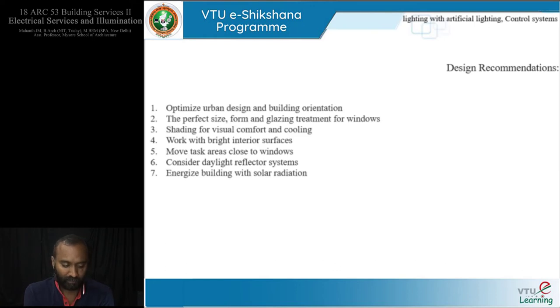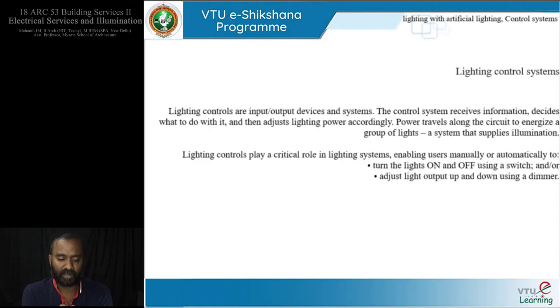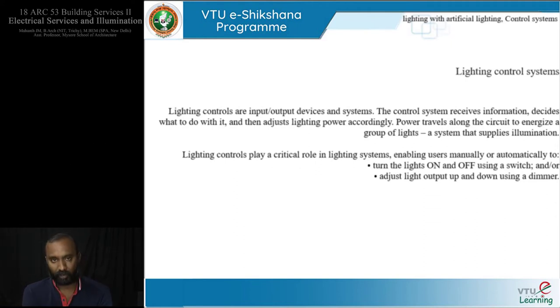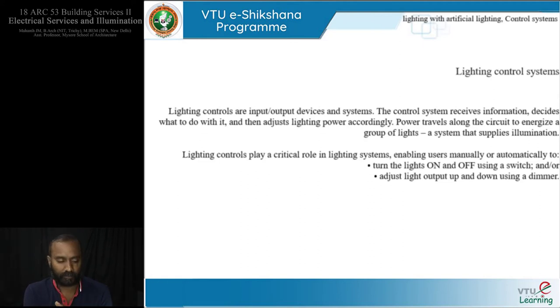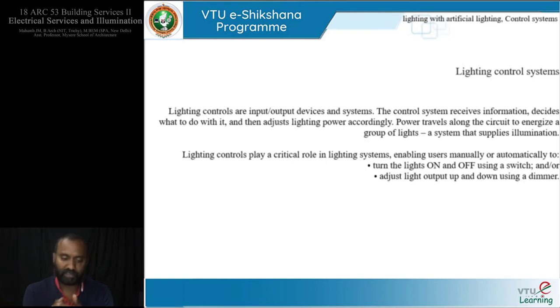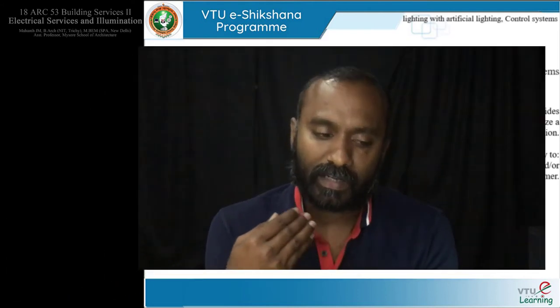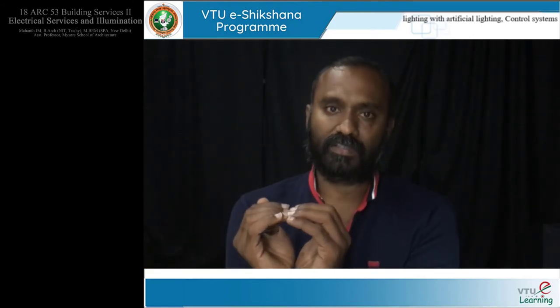From here, having discussed daylighting strategies — both passive and active and combinations of both — we now jump to lighting control systems. In plain terms, lighting control systems are nothing but your switch. Lighting controls are input/output devices. The control system receives information, processes it, and returns back a command which will change or adjust the lighting power accordingly.